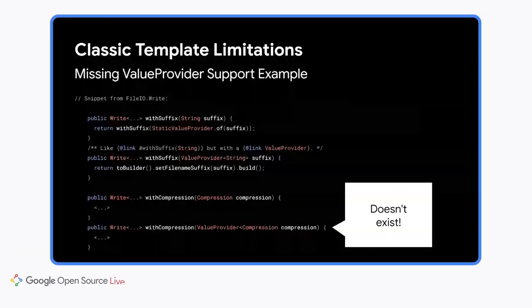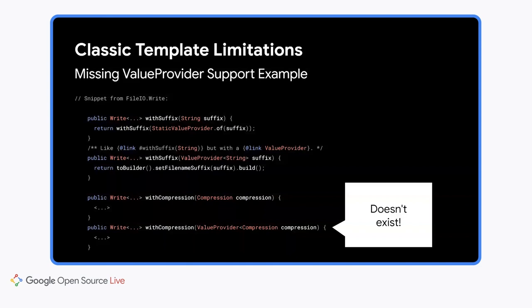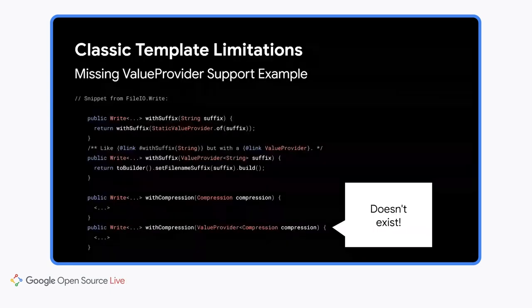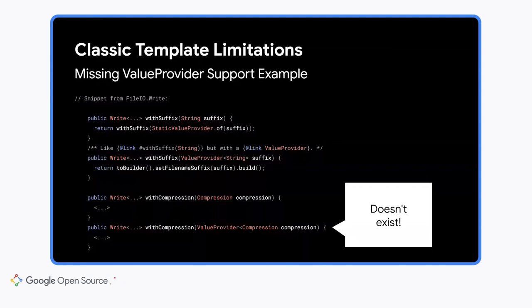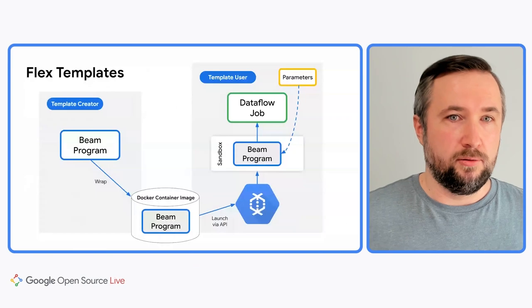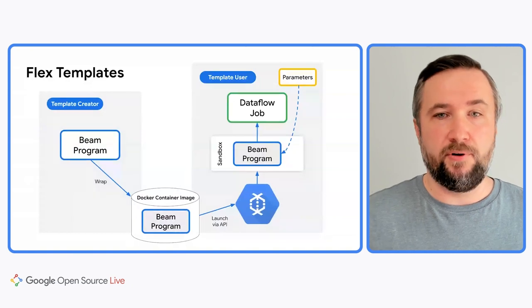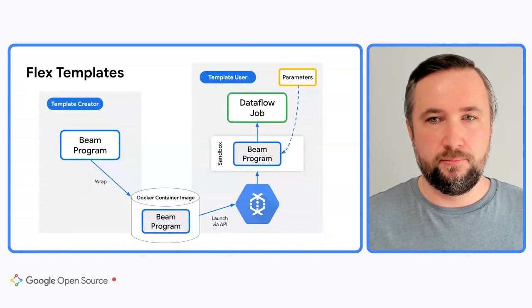Here is an example illustrating the first problem. File.io from the Beam SDK has a builder and two with-suffix methods. One accepts a plain string, and another one accepts a value provider. But the compression method accepts only a compression object — it doesn't accept a value provider. So if you want to use File.io in your template, you can parameterize the suffix parameter, but not the compression parameter. Flex templates use a different approach and are supposed to resolve all of these problems.